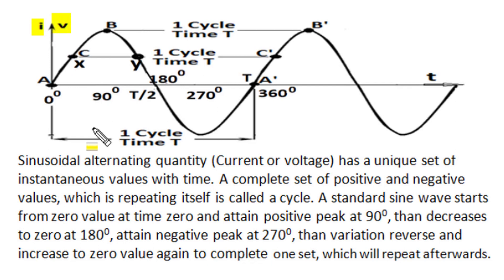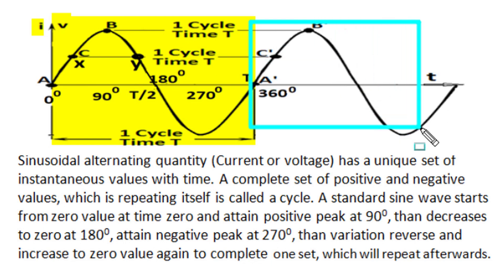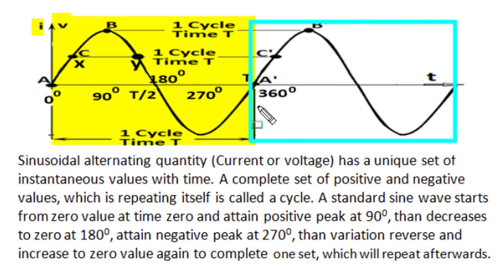A periodic sinusoidal alternating quantity, whether current or voltage, has a unique set of instantaneous values with different known repeating conditions with time. A complete set of positive and negative values is known as a cycle, and this cyclic set repeats itself again and again. This complete set of non-repetitive unique values which repeats itself is known as a cycle, and the time of one cycle is known as time period, denoted by capital T. The entire angular displacement of a cycle is treated as 360 degrees, so a half cycle is T/2 or 180 degrees, and a quarter cycle is T/4 or 90 degrees.